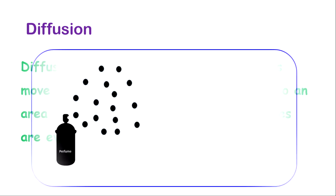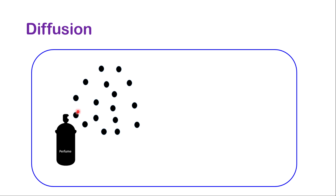Let us demonstrate this. This diagram shows a perfume bottle, and if you notice the particles right there, there are a lot of particles, which means a higher concentration of particles. Over to the right side of this diagram, there are fewer particles — in fact, there are none at this moment. So the particles will be spreading from the left to the right.